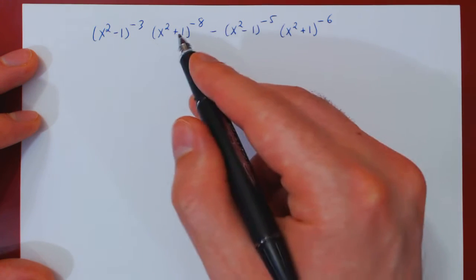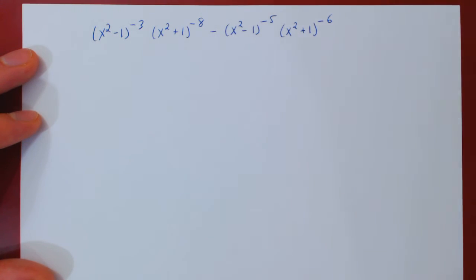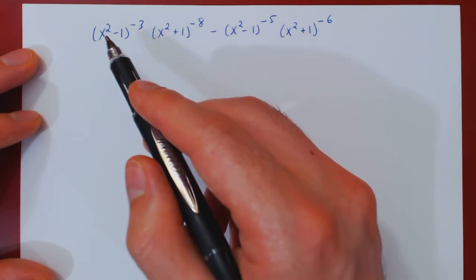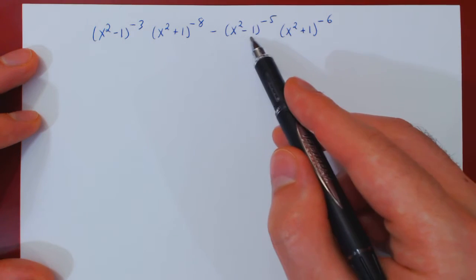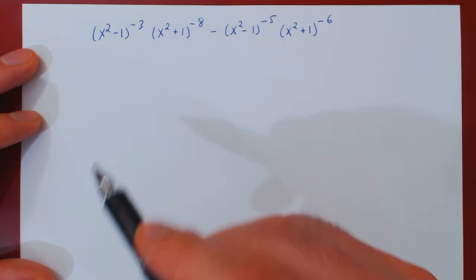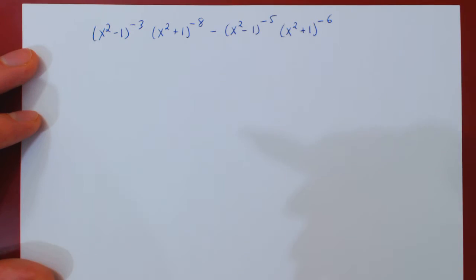Every time that you have a difference or sum of two terms, three terms and so on, whenever you identify common factors, you always factor the term with the smallest exponent.